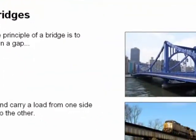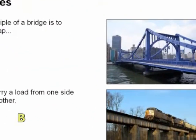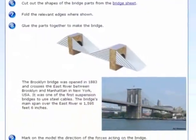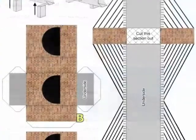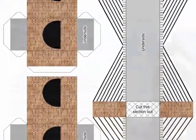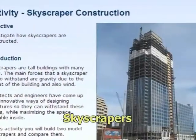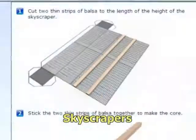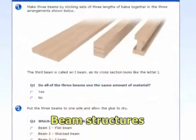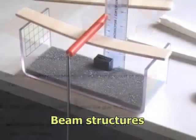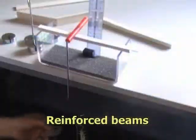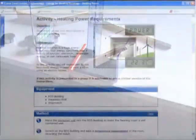Using a variety of modelling materials, students construct and test structures. Example models include bridges, skyscrapers to identify the importance of a central core, various beam structures to compare strength, and reinforced beams to test their benefits.